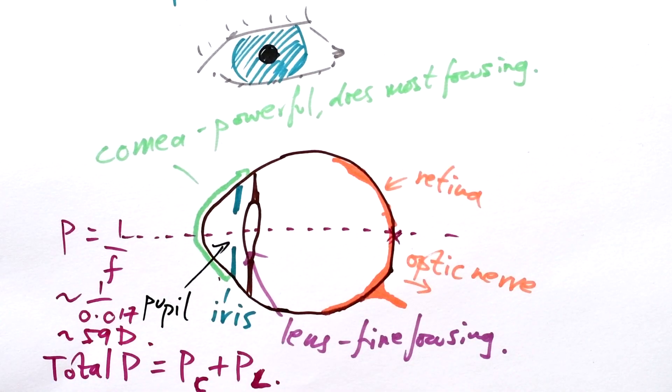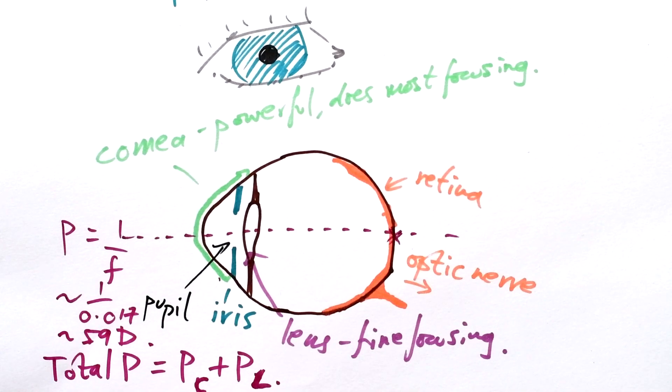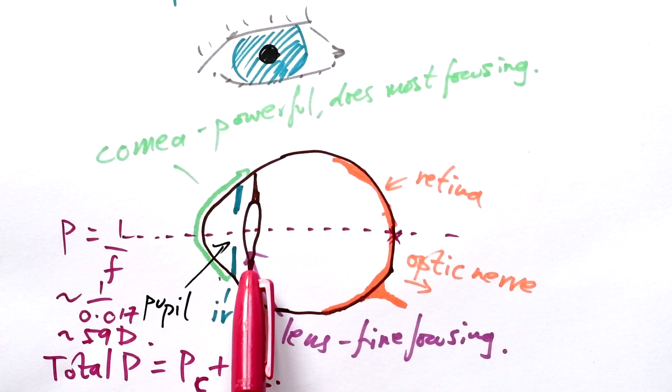But naturally you won't be focusing on something that's the same distance away the whole time. So this power needs to change. And what changes? It's the lens here that changes, not the cornea.